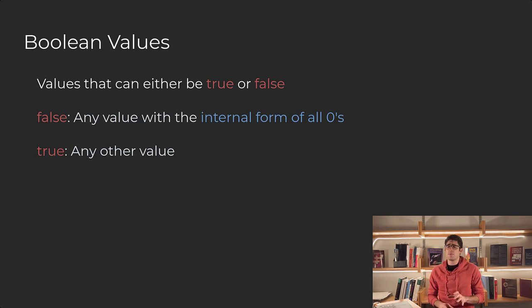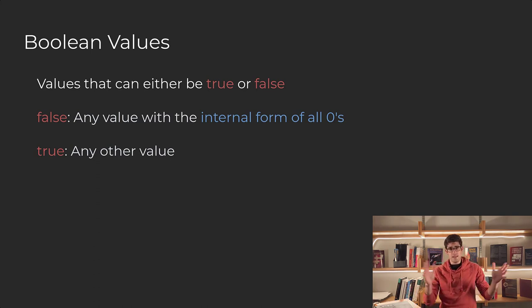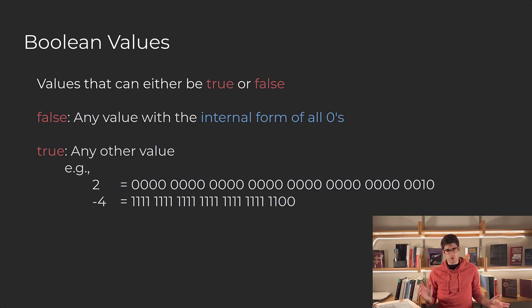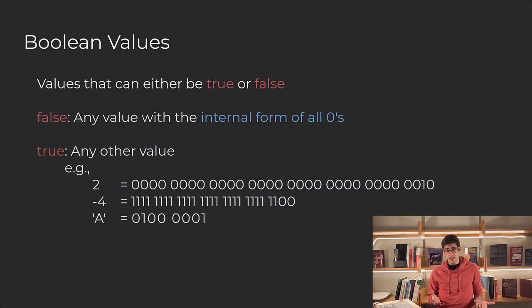So now let's talk about the value true. True is any other value — values that don't have the internal form of all zeros. So think about the number 2, negative 4, or the character A, something like that. So now that we know about Boolean values, let's move on into logical expressions.